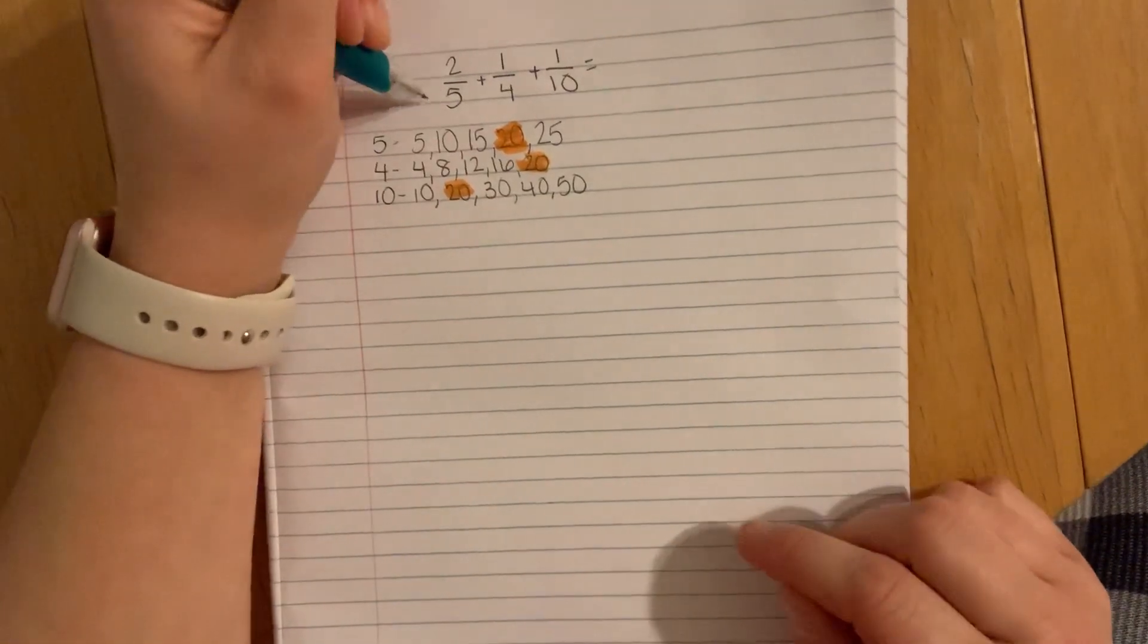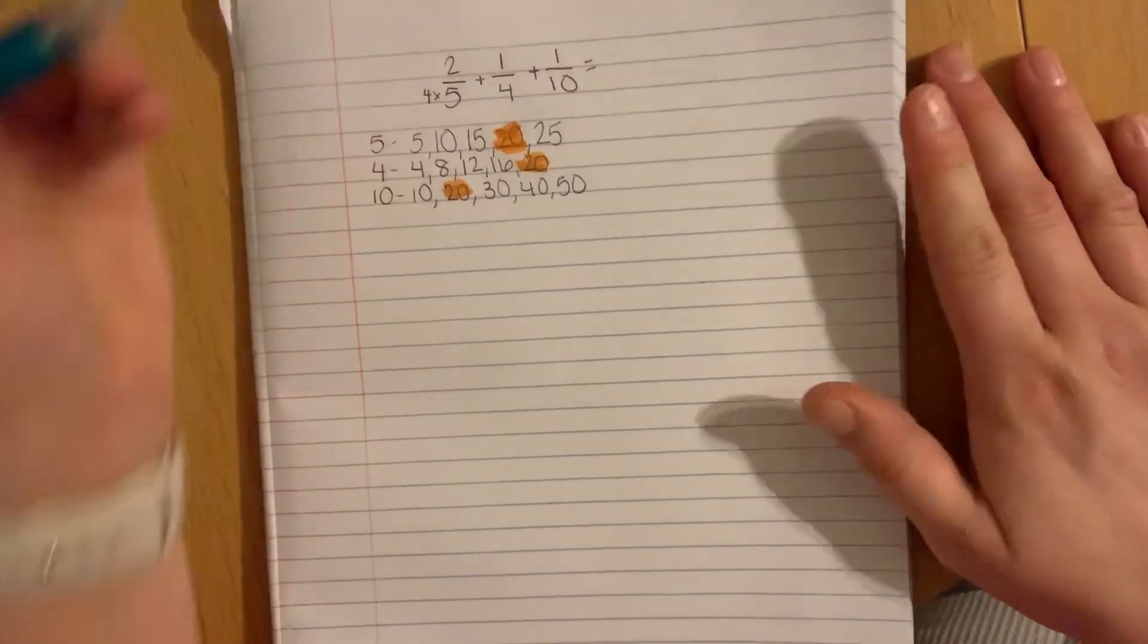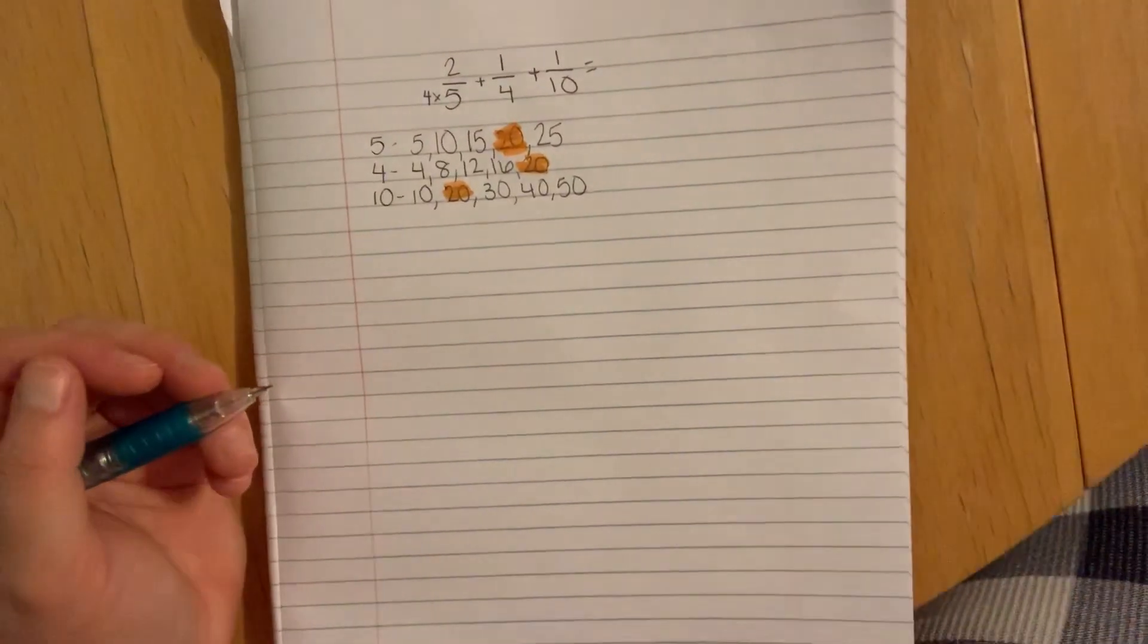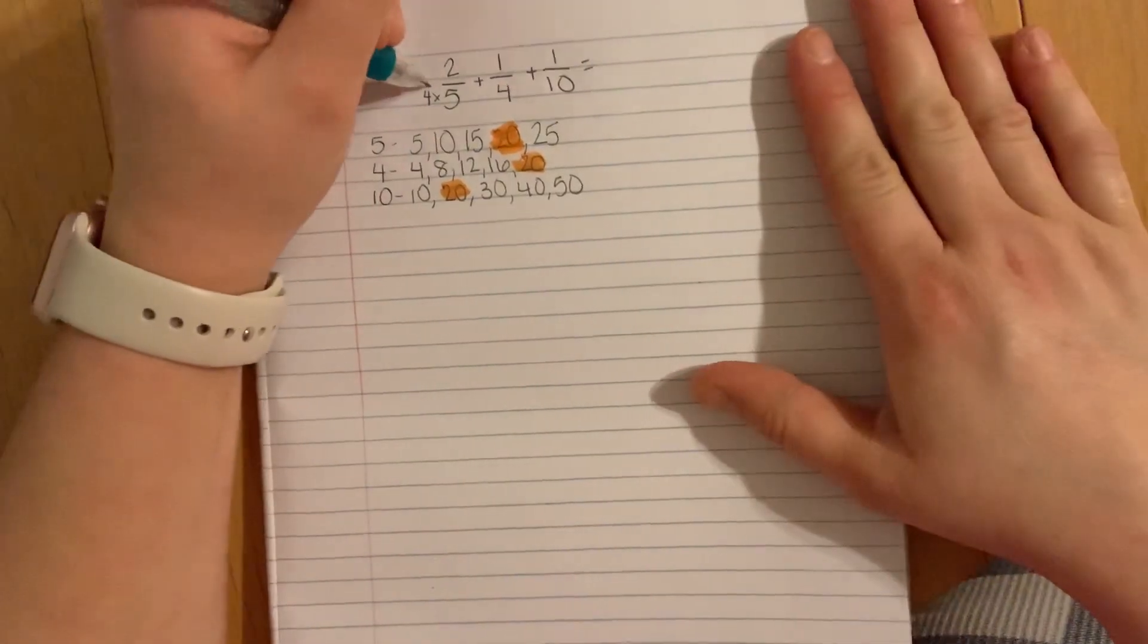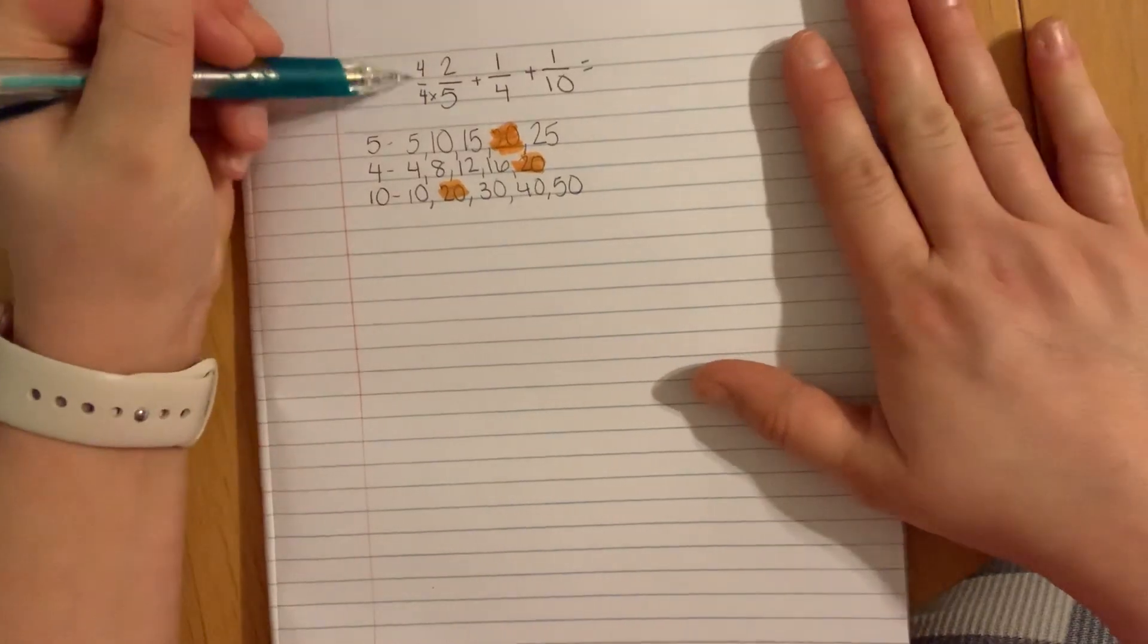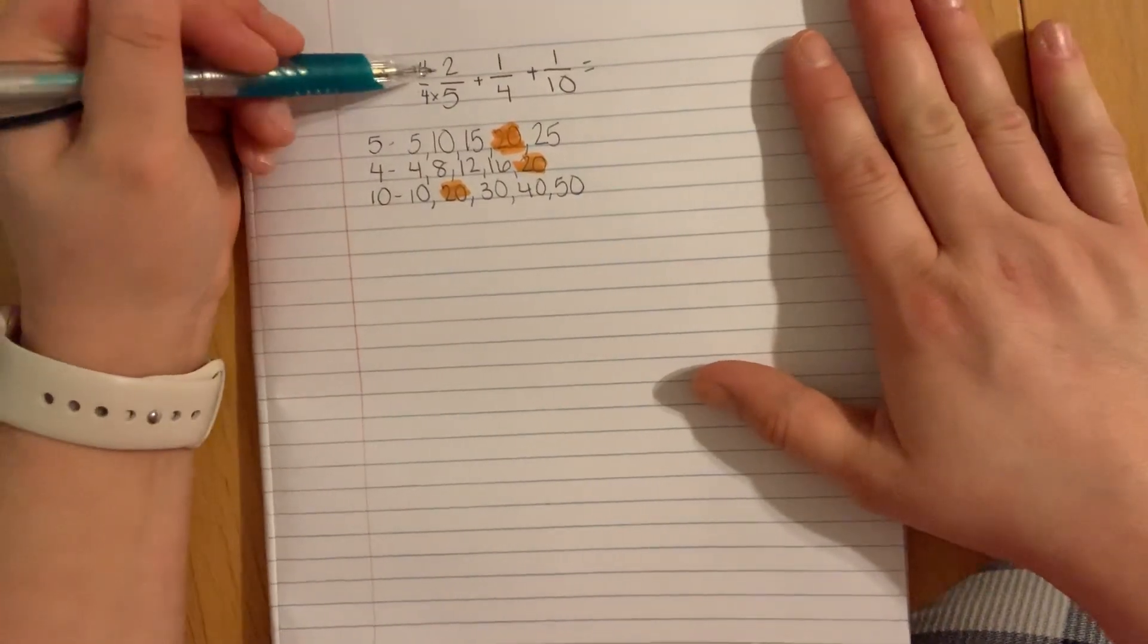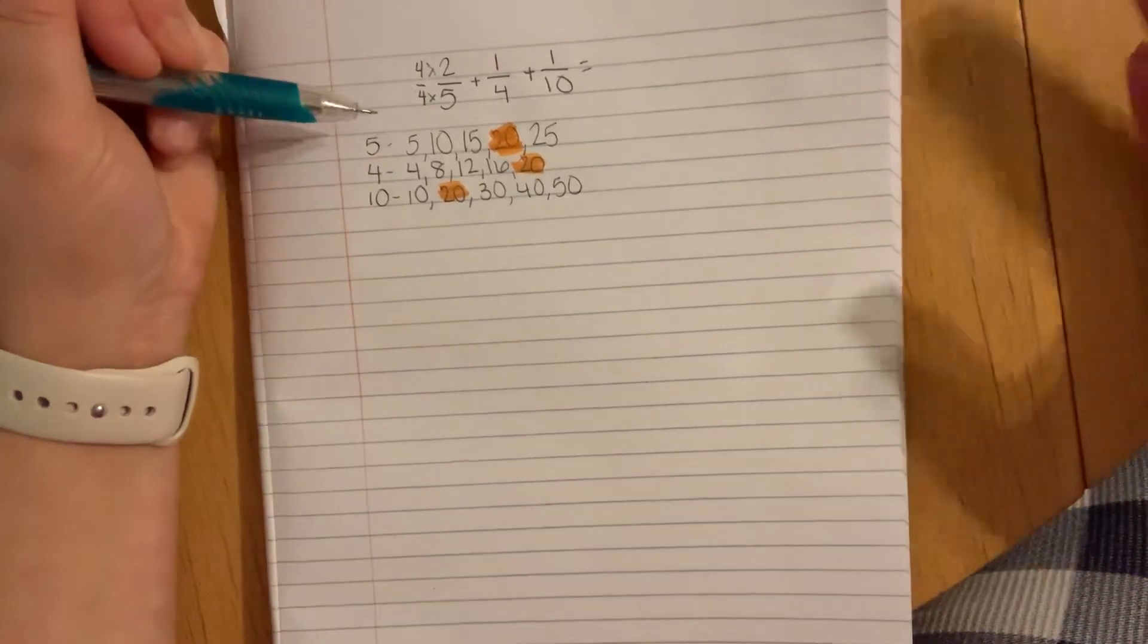To get from 5 to 20 we need to multiply by 4. You can't just multiply the denominator. You need to make it make sense, and the only way it makes sense is if you make this into a fraction: 4 over 4 times 2 fifths, because 4 over 4 is equivalent to 1.